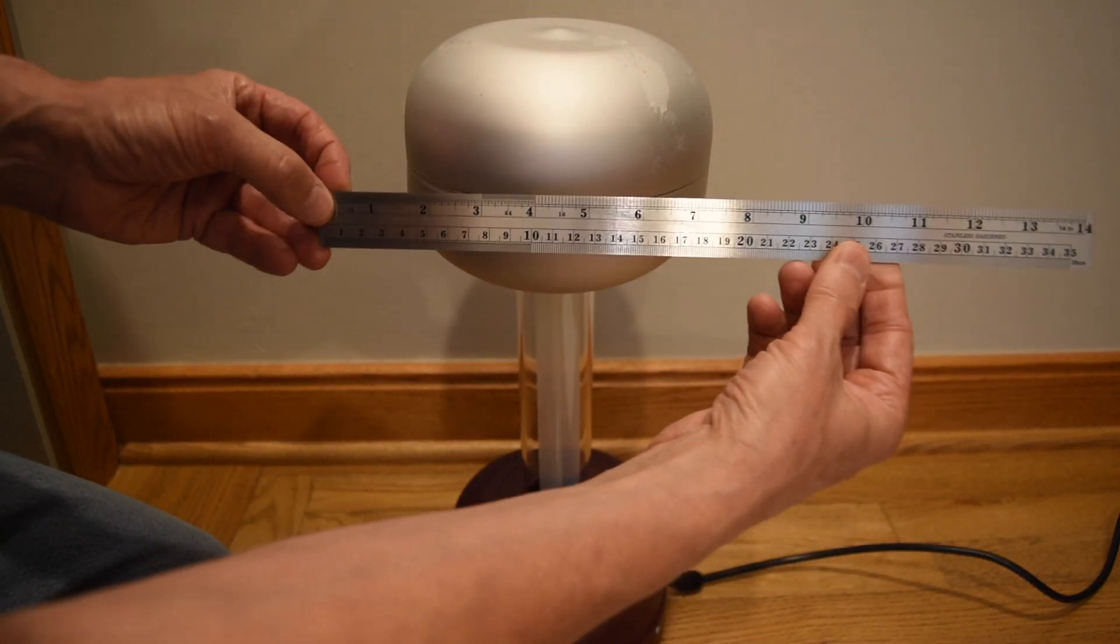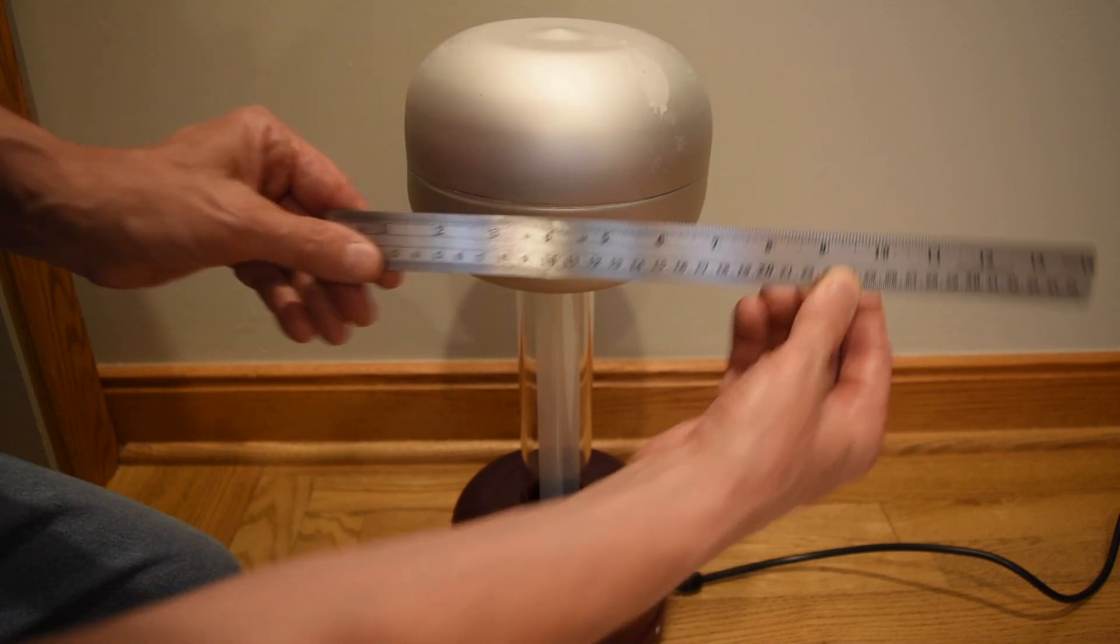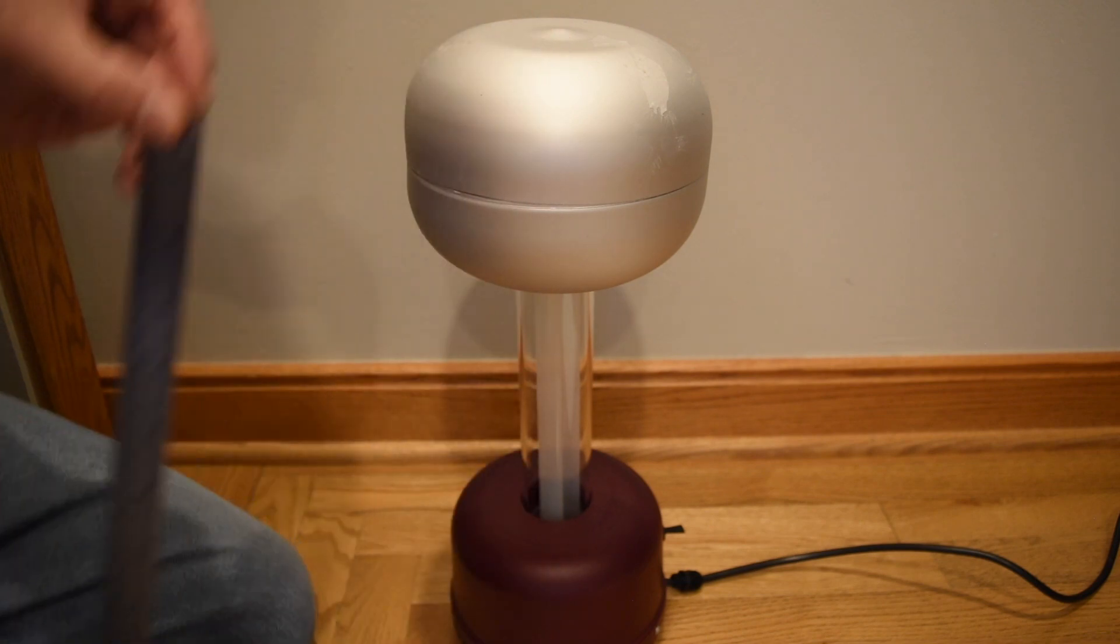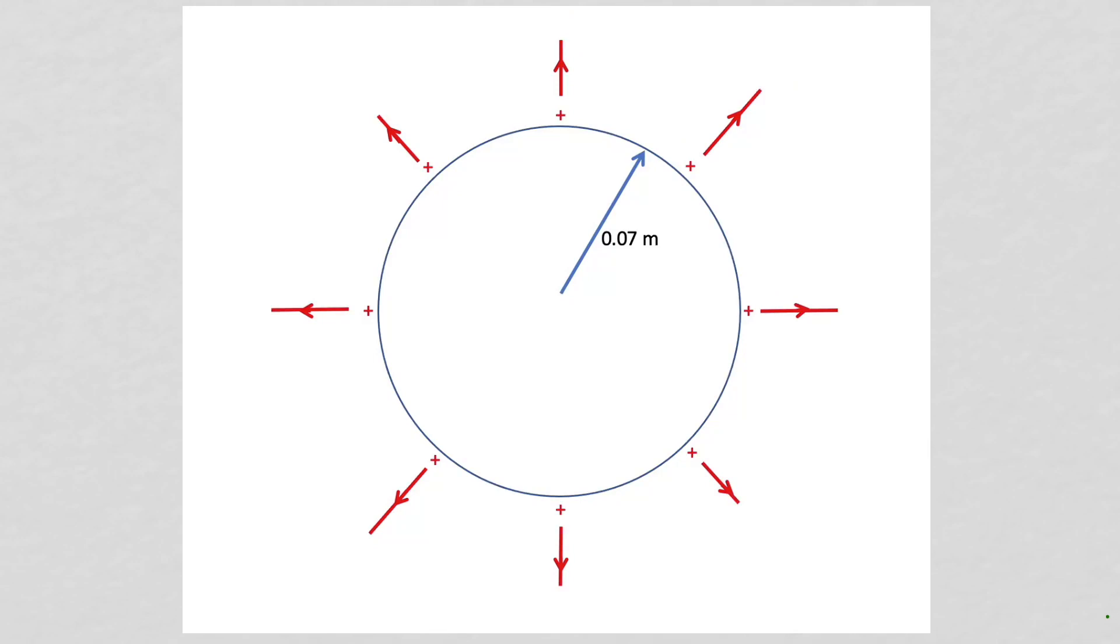My Van de Graaff generator is about 16 centimeters across and it's about 12 centimeters high. This is a shape that would be difficult to analyze, so we will approximate our Van de Graaff generator with a sphere of radius 7 centimeters. What we want to determine is how much charge is on the sphere when it reaches 300,000 volts.